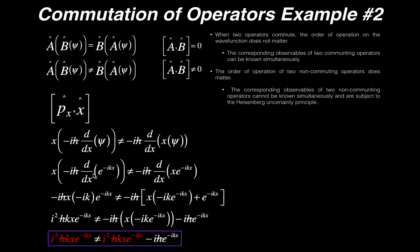We differentiate e to the negative i k x with respect to x and then multiply by negative i h-bar, with an x out front from the position operator. Differentiating the exponential using the chain rule gives e to the minus i k x times negative i k from the inside function. Combining the two i's gives i squared, and the two negative signs cancel to give a positive result. So operating with momentum first and then position gives: i squared times h-bar times k times x times e to the minus i k x.